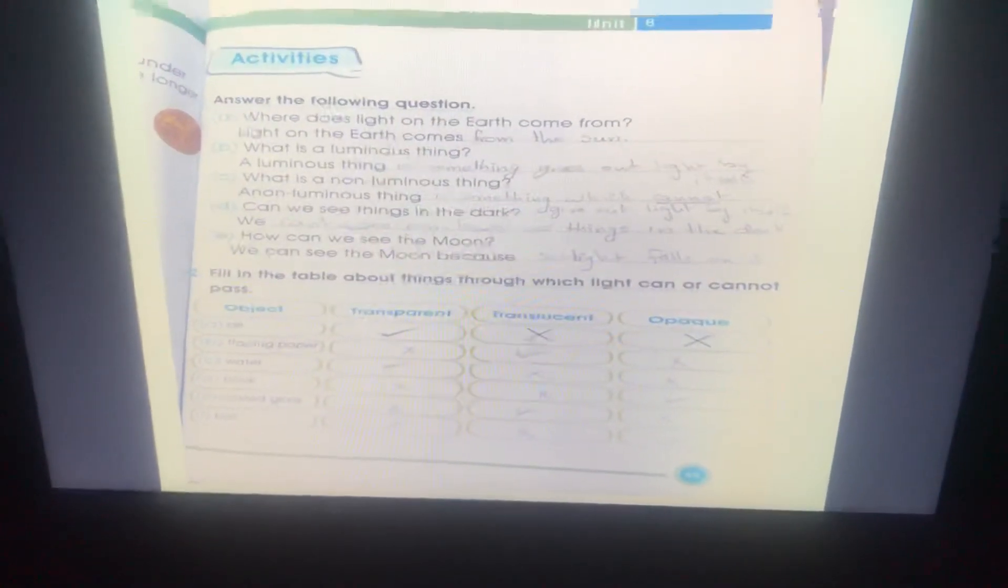What is an luminous thing? Excellent. An luminous thing is something which cannot give out light by itself.